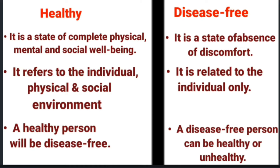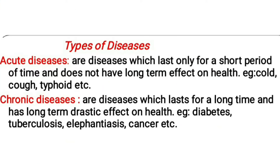A healthy person will be disease-free, whereas a disease-free person can be healthy or unhealthy. Based on duration, diseases are classified as acute disease and chronic disease. Acute diseases last for a short period only — for example, common cold — and do not cause major effects on general health.